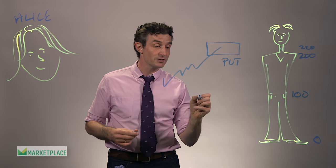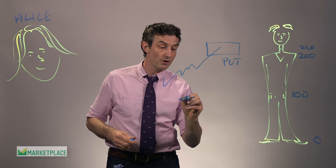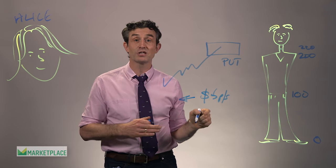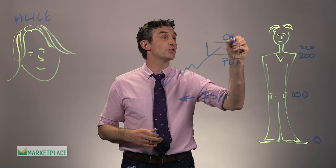But that doesn't come cheap. She has to buy that option. And it costs her about five dollars per share. So not cheap. But she can pay for that using something called a call, which is the other part of the collar.